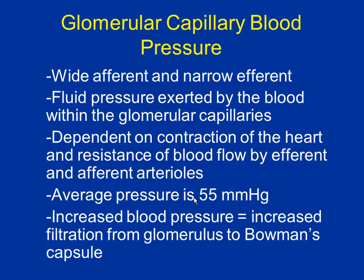The average pressure at the glomerulus is 55 millimeters of mercury — that's pretty high for these little capillaries only one cell thick. If you increase blood pressure, you increase the filtration rate. If I put one liter per minute in, 20% gets filtered. If I put two liters per minute in, I still get 20% filtered but I've doubled the filtrate. This factor can change really rapidly, so it's the most significant of the four pressures.